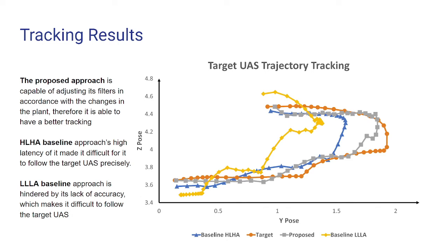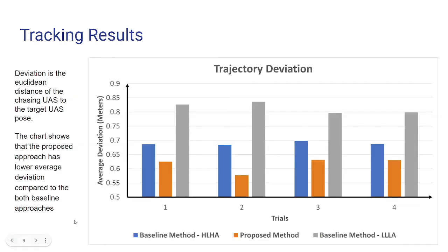On the other hand, the proposed approach can behave in both ways based upon the situation — providing fast inference to the controller while also providing robust confidence to the controller. Here you can see the trajectory deviation plots for four trials of each approach. The baseline LLLA has much more deviation than the other two, and the proposed approach has less deviation compared to both baseline approaches.